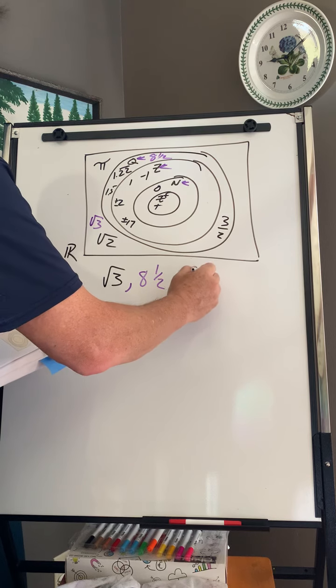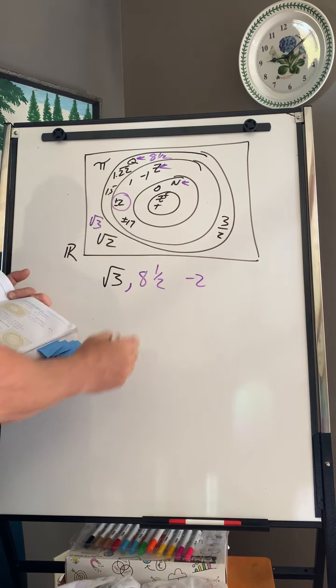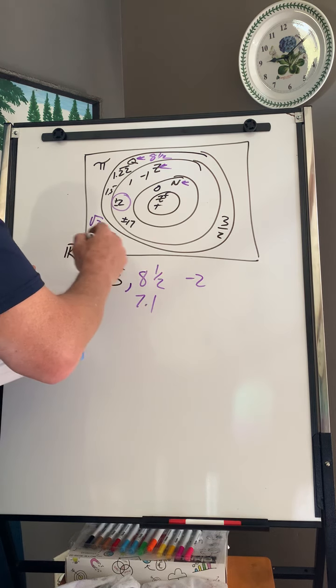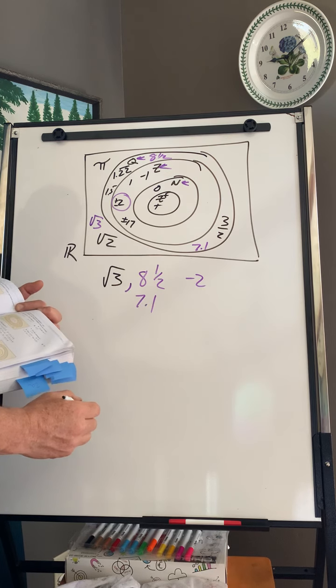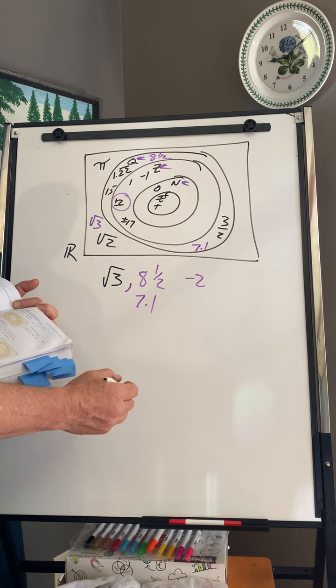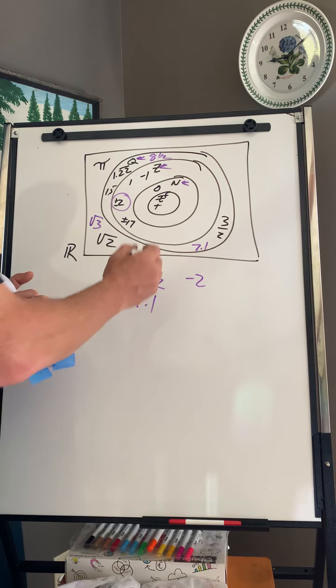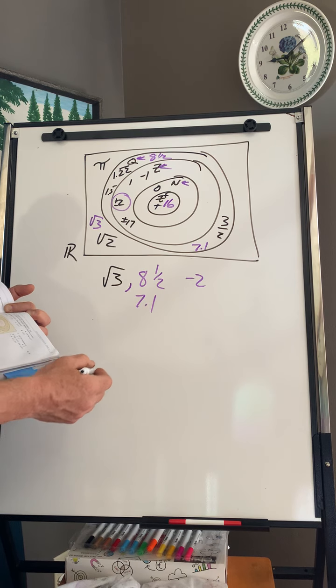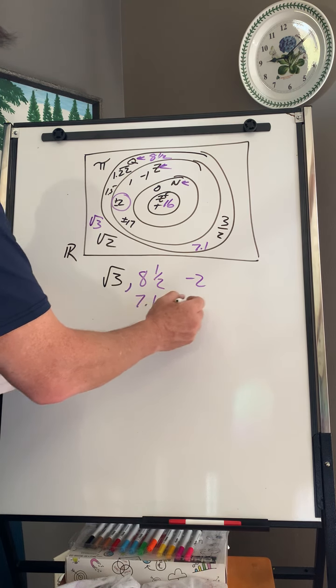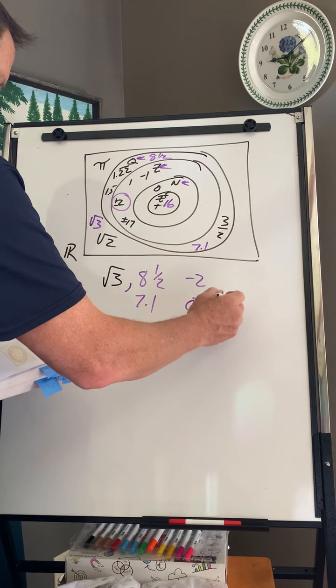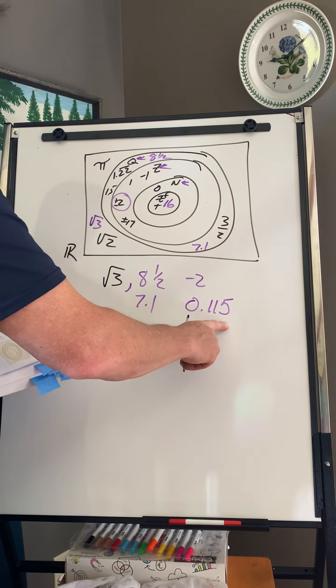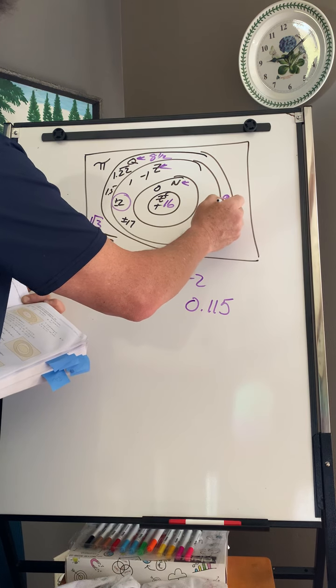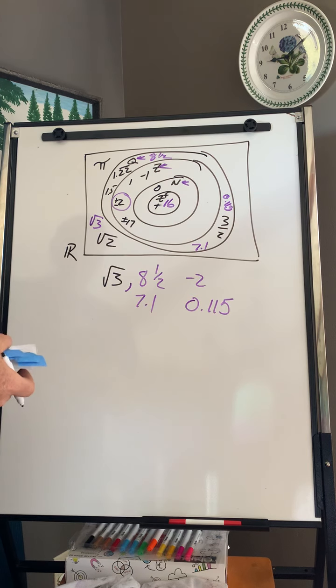Negative 2. It's an integer. So it's already here. 7.1. That's rational because it's a terminating decimal. 16. 16 is going to go all the way into the center because it's a positive integer. And then I have 0.115. Terminating decimal. So it goes in the rational part. But it's not an integer.